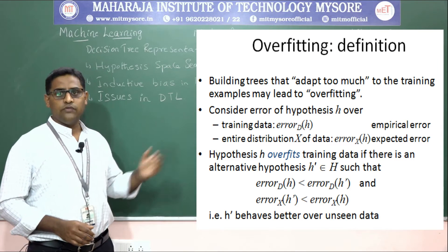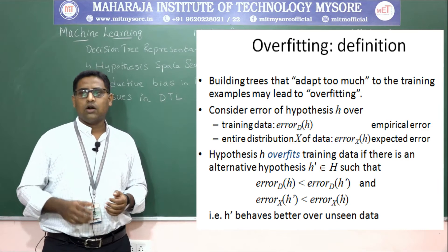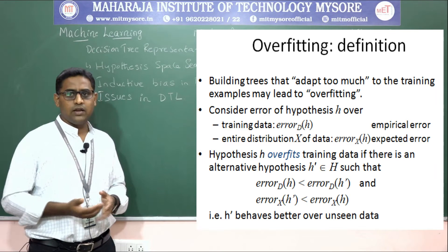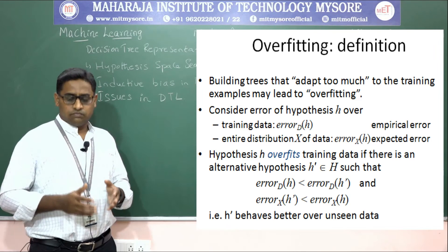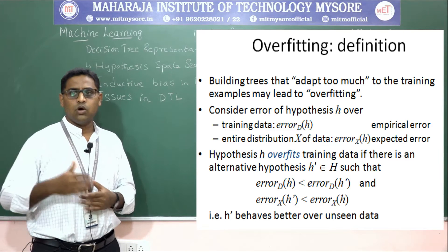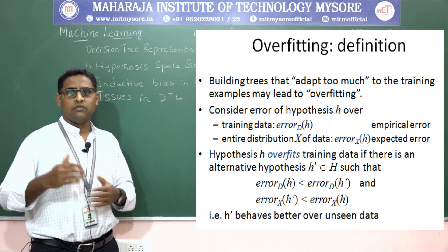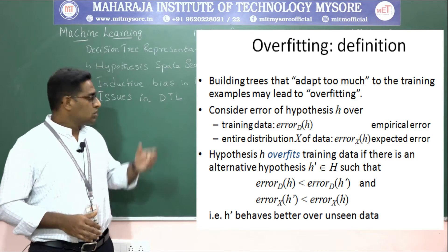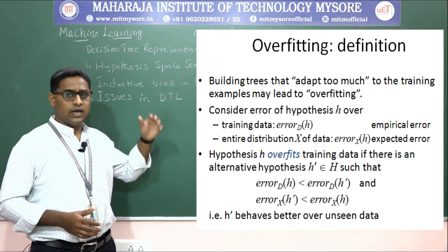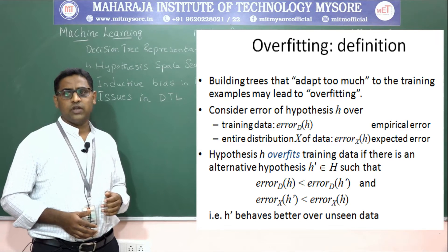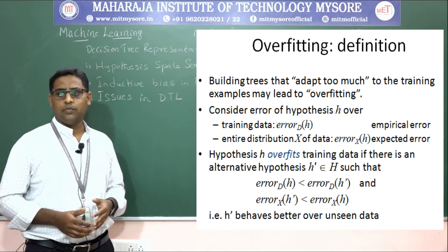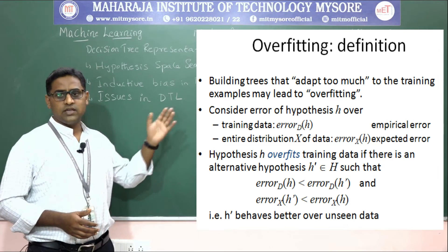Overfitting is defined as building trees that adapt too much to training examples. If you have 100 data sets and fit beyond that — 101, 102, and so on — it leads to overfitting. For hypothesis H, we define error D(H) as empirical error and error X(H) as expected error over the full distribution.